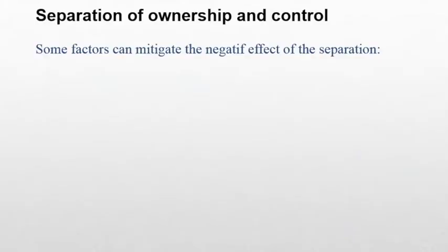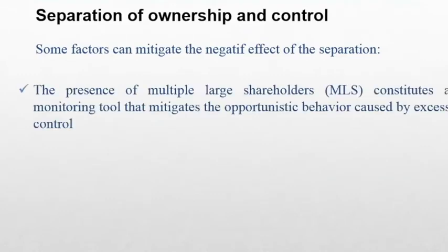Second, there are some factors that can mitigate the negative effect of the separation. Of course, those factors are linked to the ownership structure. For example, when we have many large shareholders in the company, it constitutes a monitoring tool that mitigates the opportunistic behavior caused by the excess control. The multiple large shareholders can force the managers to communicate more transparent information about the strategy of the firm, namely about the CSR activities.